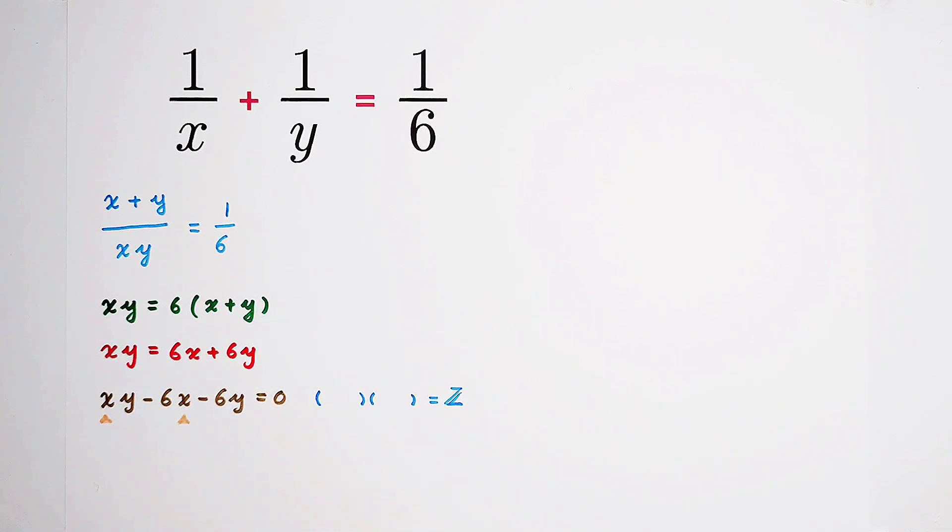So we can firstly take out an x from these two terms. And here in the bracket, it's gonna be y minus 6. Okay, then minus 6y is 0. The left-hand side cannot be continuously factorized. Then what shall we do?